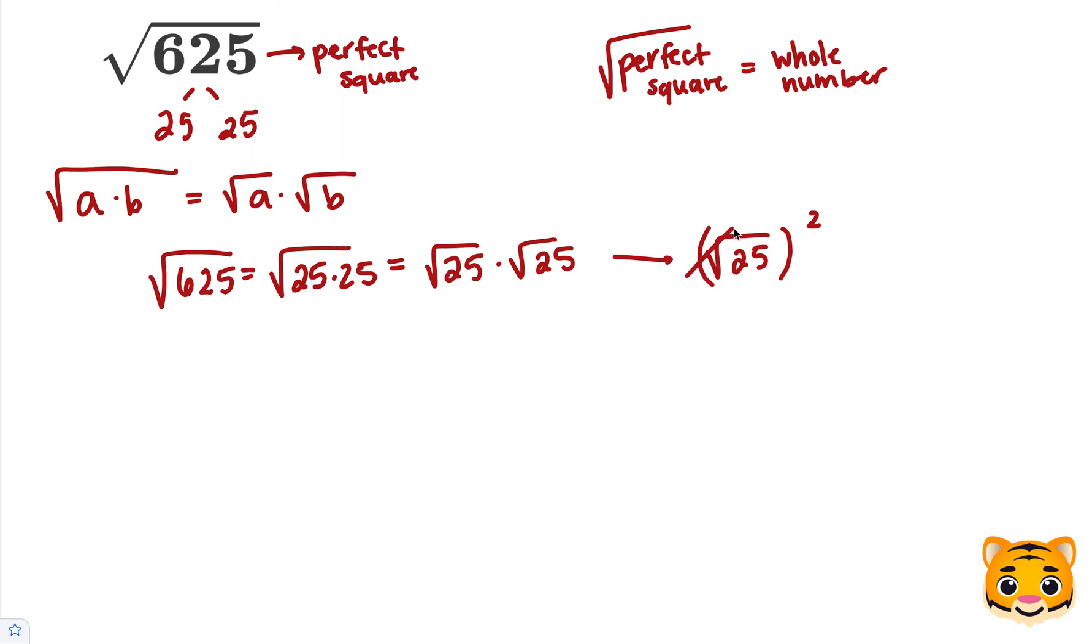The square root of something squared cancels them out as their opposite operations, and therefore we just get 25, meaning the square root of 625 is equal to 25.